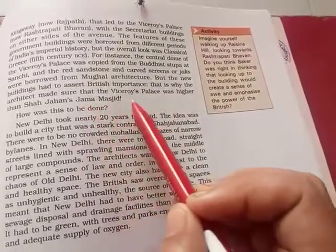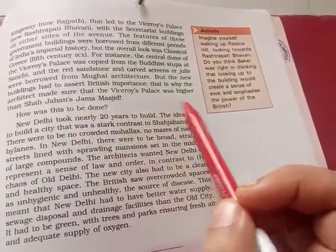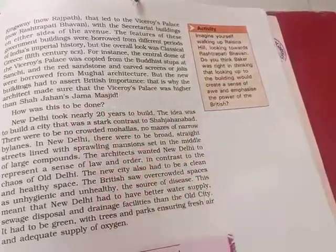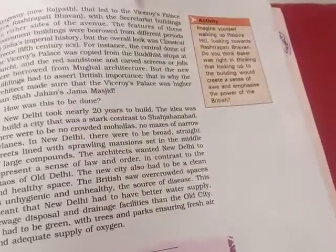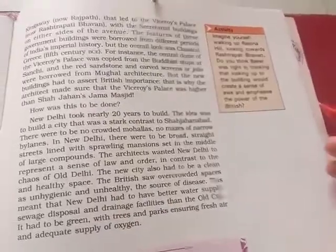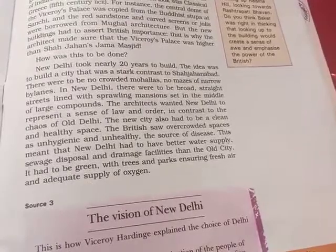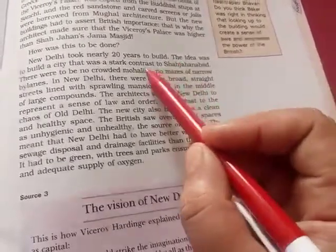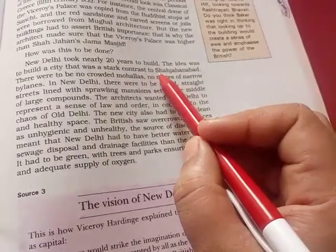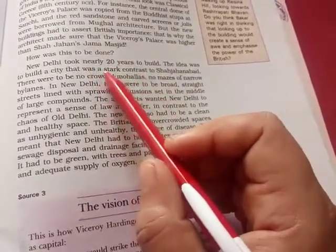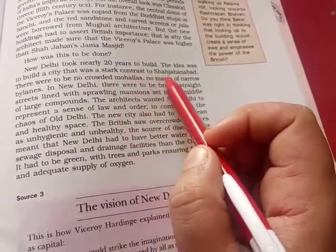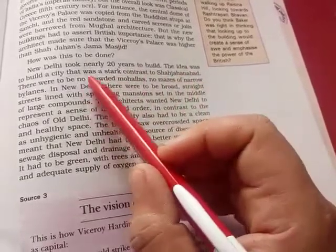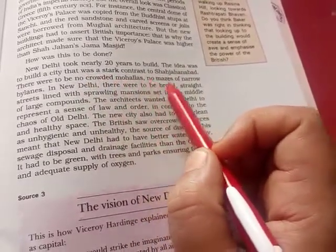The British architects made sure that the Viceroy's Palace would be higher than Shah Jahan's Jama Masjid. New Delhi took nearly 20 years to build.